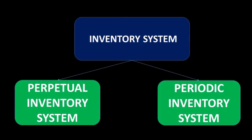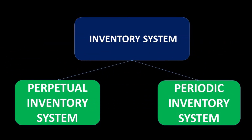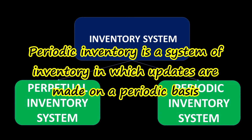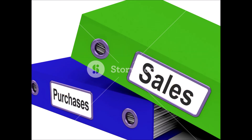In the perpetual inventory system, the inventory and COGS accounts are perpetually updated — meaning never-ending updation. The inventory account increases when goods for sale are acquired and decreases when goods are sold. The COGS account is updated every time a sale is made. In the periodic inventory system, the inventory account is only periodically updated — at the end of the year or end of the month.